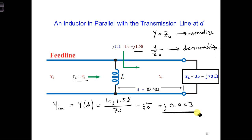And the shunt admittance we need from the inductor here between the two conductors of the transmission line, we need YL is equal to minus J0.023.